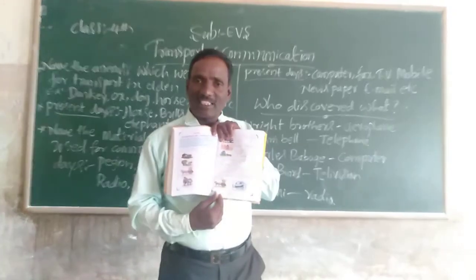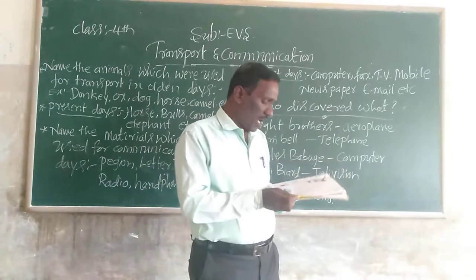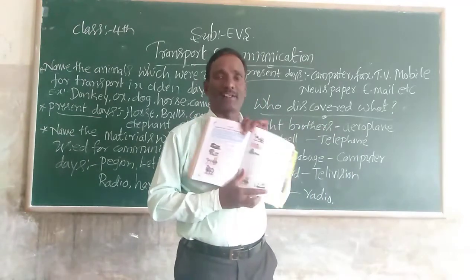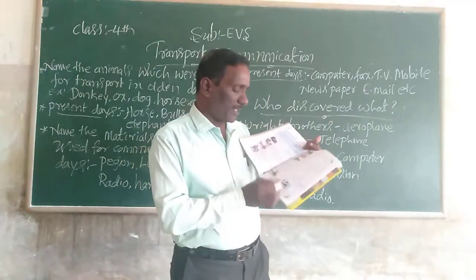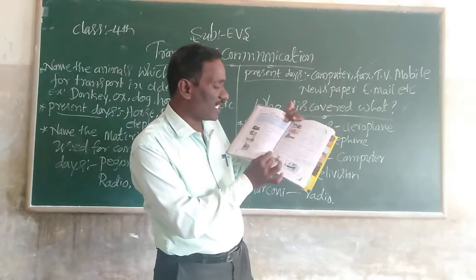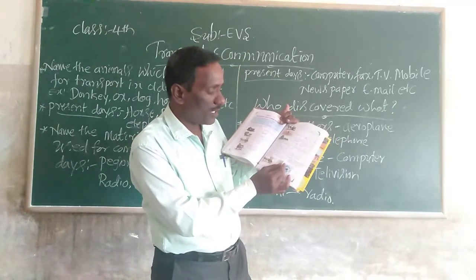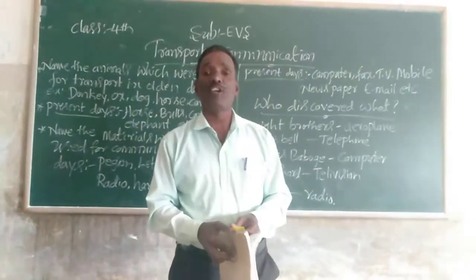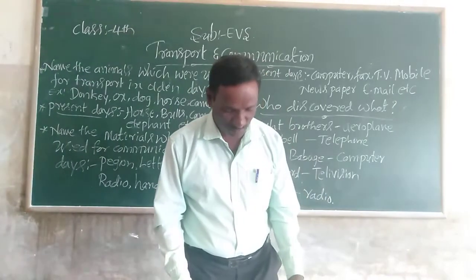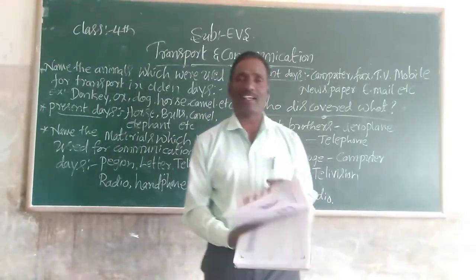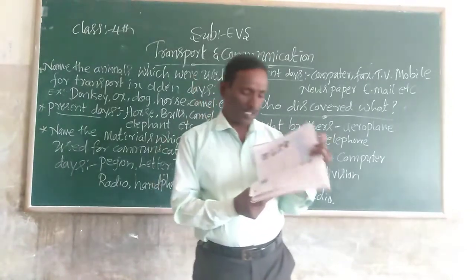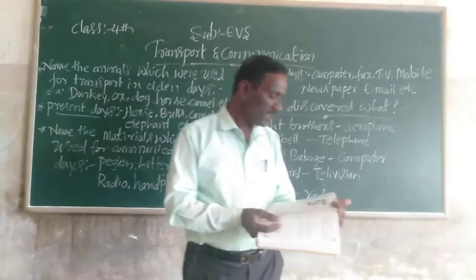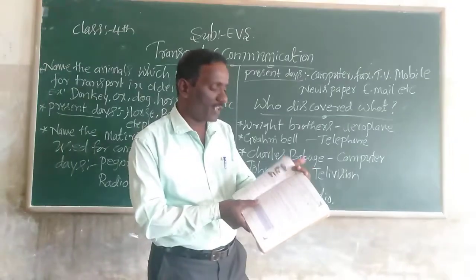Next, students, go to page number 138. Observe the pictures given below in the textbook. We will once again read this paragraph: identify the changes that have taken place in transport and put a serial number to show the order. Here are some transport vehicles given in your textbook. You write the serial number in the correct order: bullock cart, aeroplane, man, cycle, car, ship, bullock cart, train.